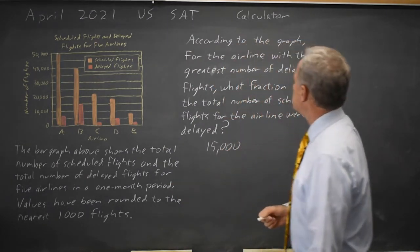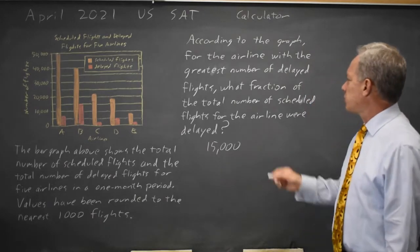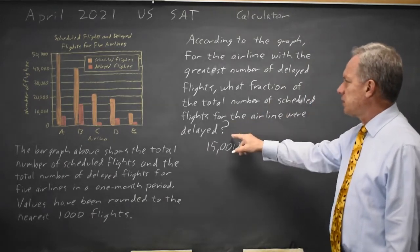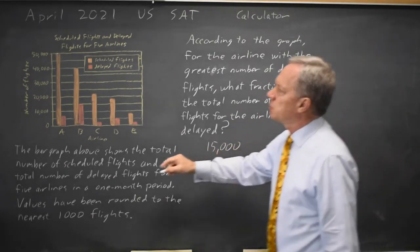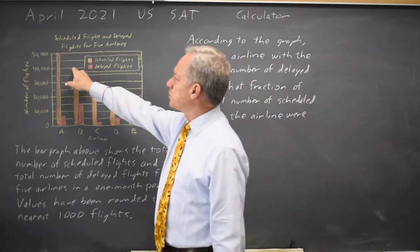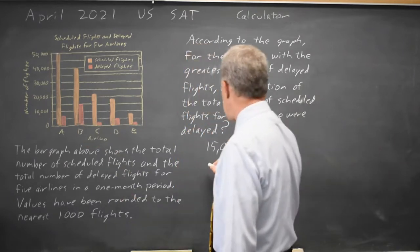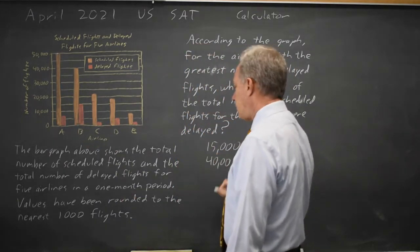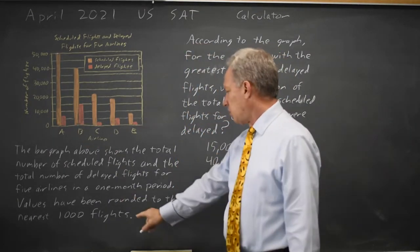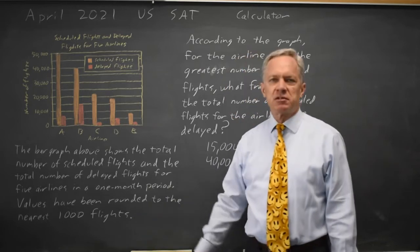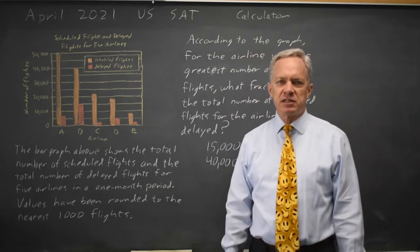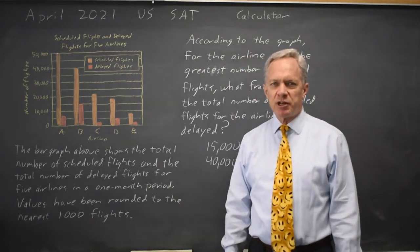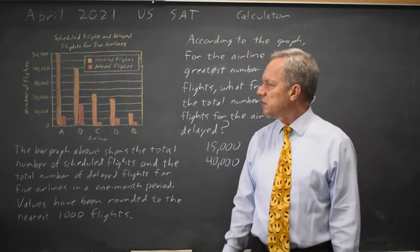And the question is: what fraction of the total number of scheduled flights were delayed? Total number of flights was 40,000. And remember, these are all values to the nearest 1,000 flights, so we don't have to worry about reading more precisely.